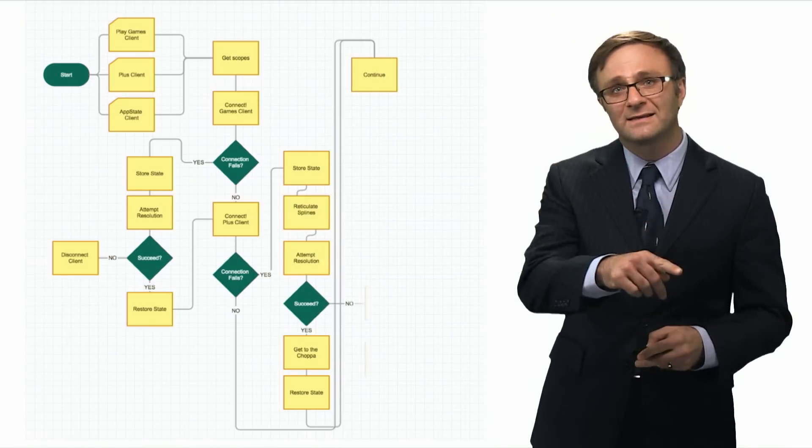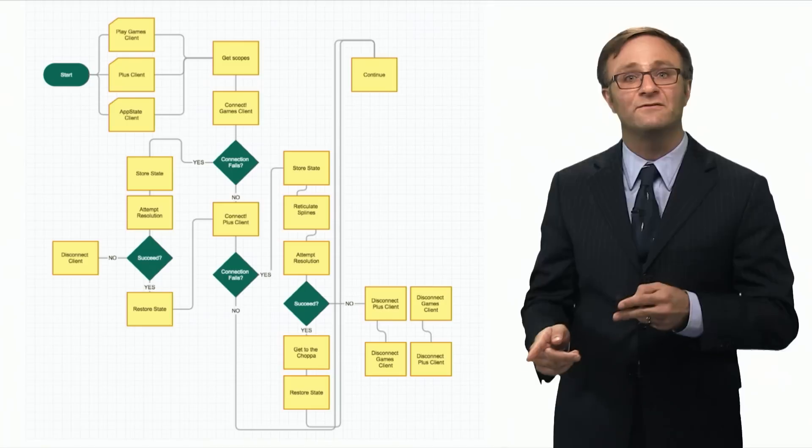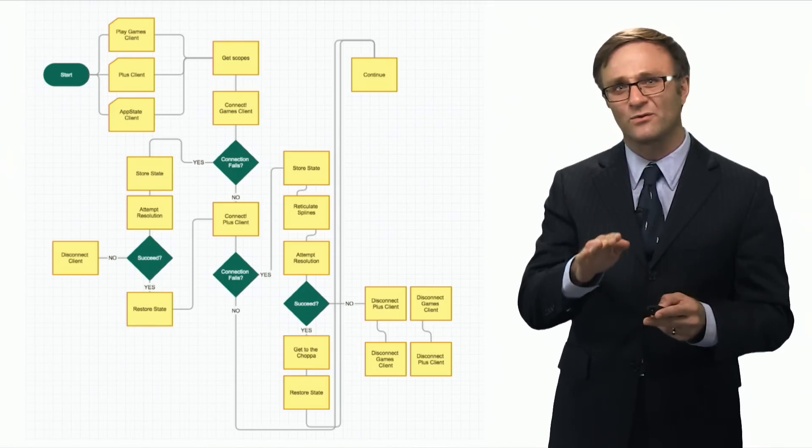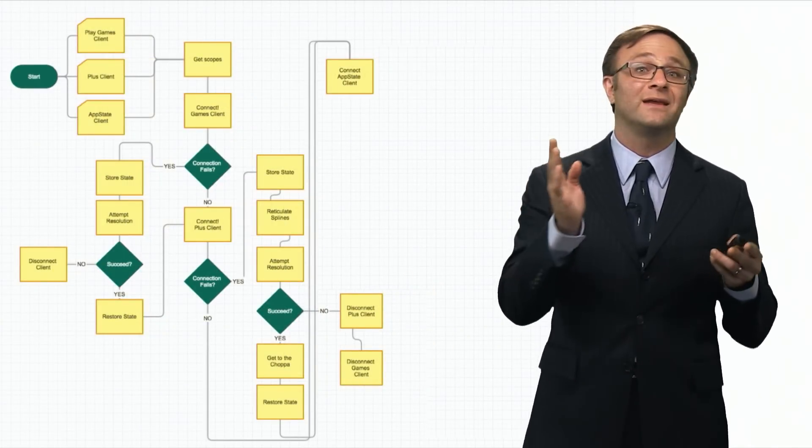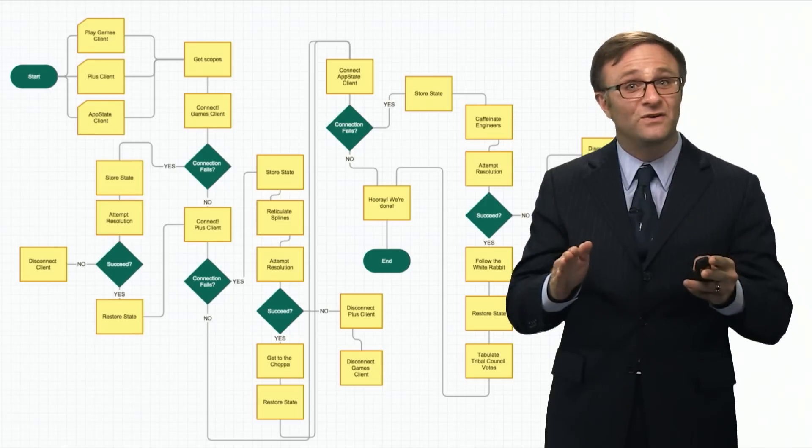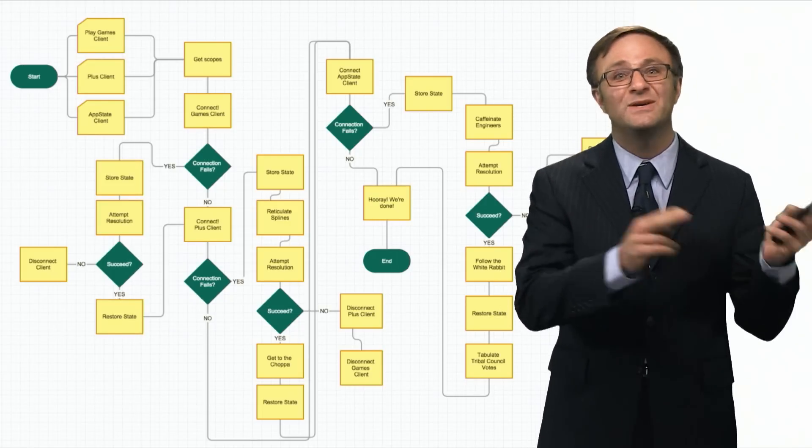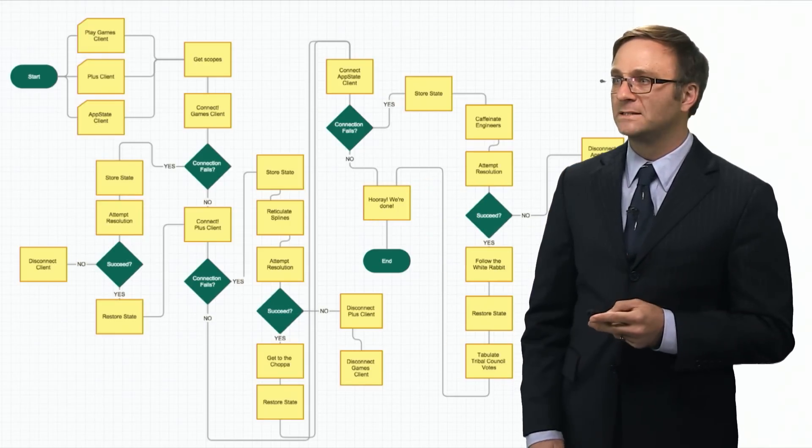Oh, but if it fails a second time because the user said, I don't want to sign in, you'll need to resolve this by disconnecting the Plus client first and then the games client. You don't want to do that in the wrong order because that would put your game in a bad state. Of course, if all that worked, you could do the whole thing again with the App State client, with all the same rules as before, but only do this after you've connected your other clients. And if it fails a second time, disconnect everything in the reverse order: App State, Plus, and then games. So easy, right?